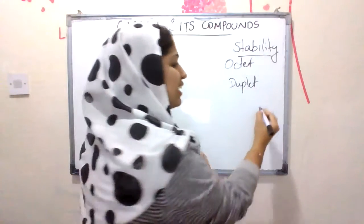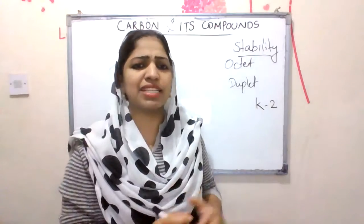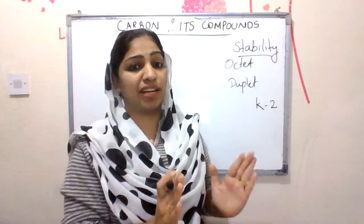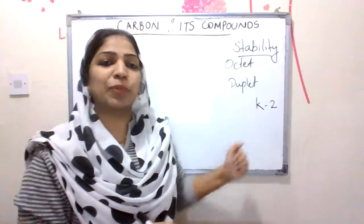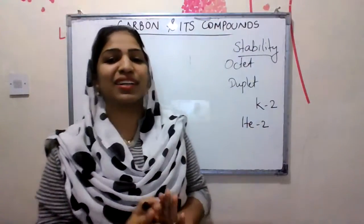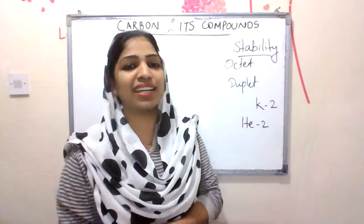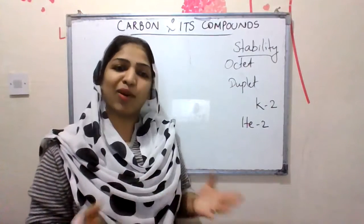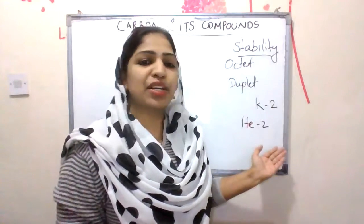If you are in the K shell, the K shell capacity is maximum. If you have electrons within the K shell, they will become stable. Helium has atomic number 2, which means it is already a duplet. That means helium is already stable — it is inert and ideal because it is already duplet complete.